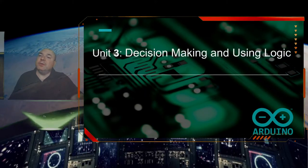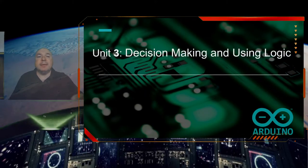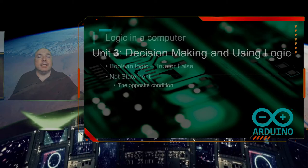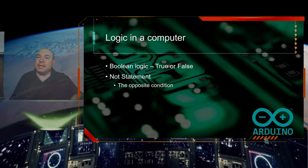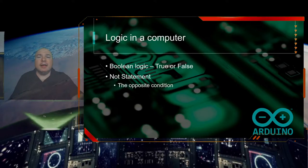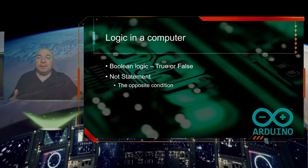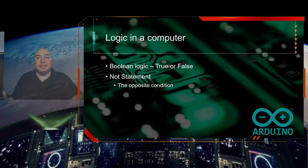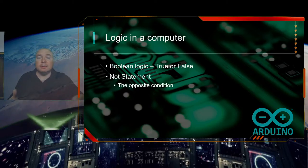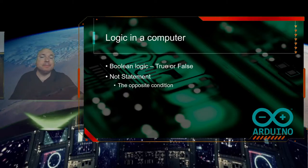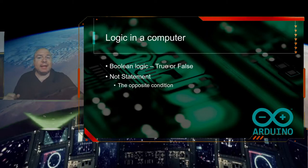This is still part of Unit 3, Decision Making and Using Logic. We're going to look first at logic in a computer. A computer can either be true or false when we're talking about logic — it's a switch, either on or off, much like our toggle switch we're going to build. So it's a great example.